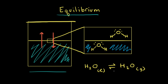To represent these two processes, we can show liquid water on the left and gaseous water on the right. In the forward process, liquid water turns into gaseous water, and this forward arrow represents the process of vaporization. When gaseous water turns back into liquid water, that's the process of condensation. Since we start with liquid water, at first the rate of vaporization is greater than the rate of condensation.